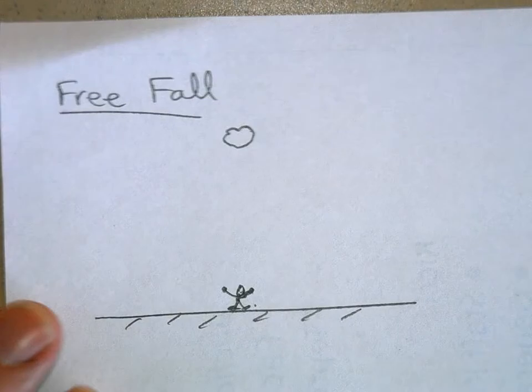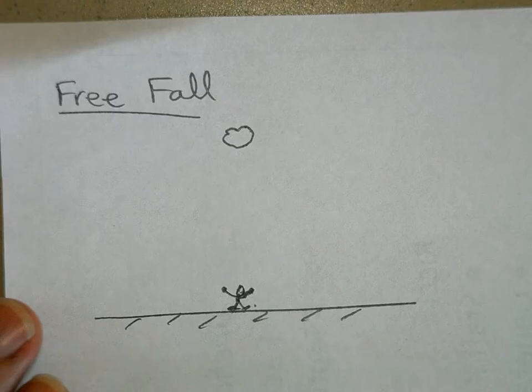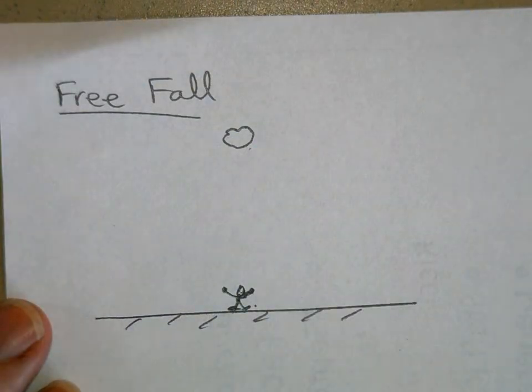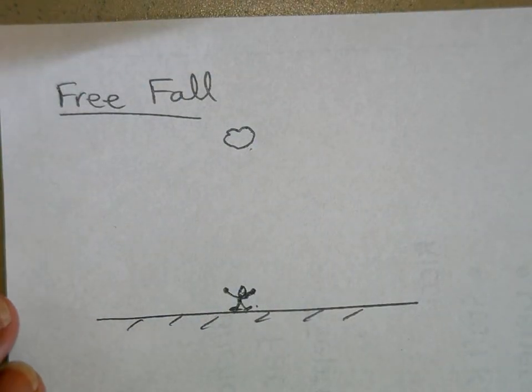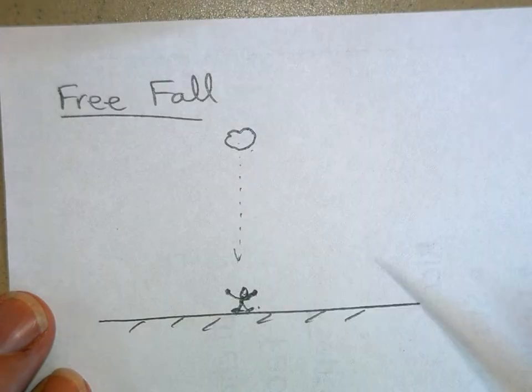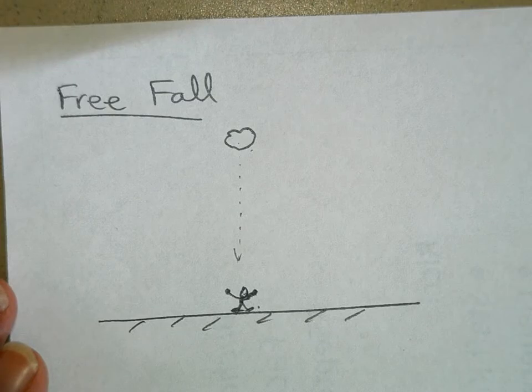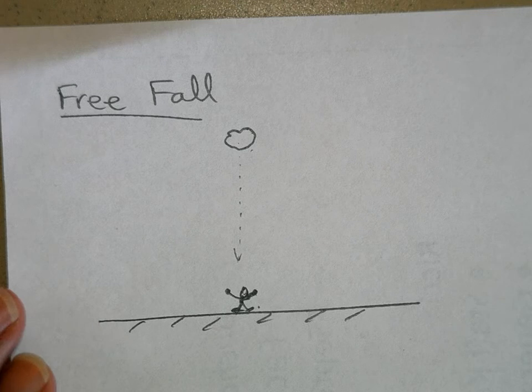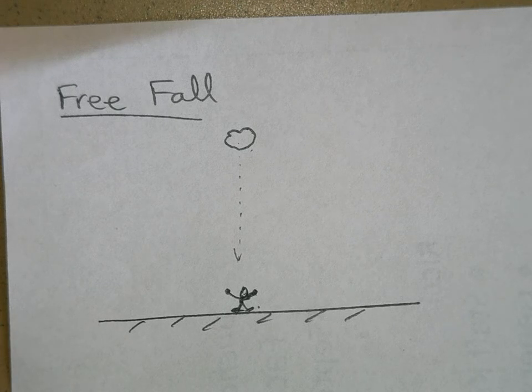You probably know from everyday experience that if this rock is released, its velocity will change, and it will start to increase its velocity in a downward direction. So the question is, is that acceleration constant? And if it is constant, what is it?